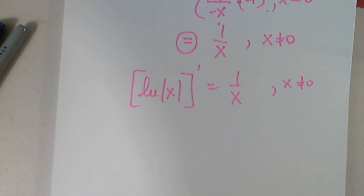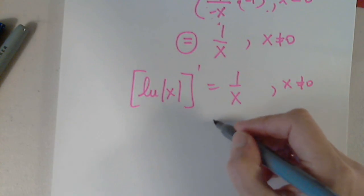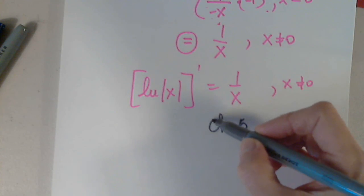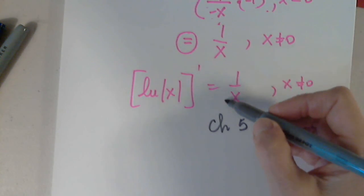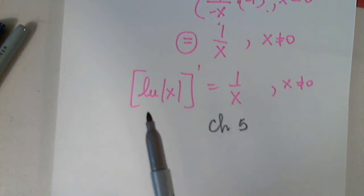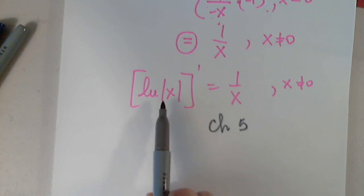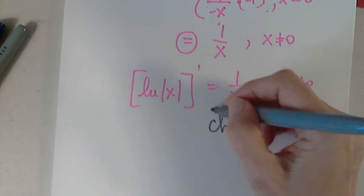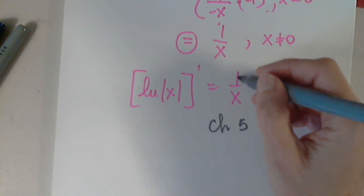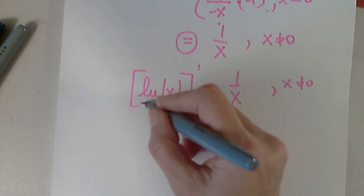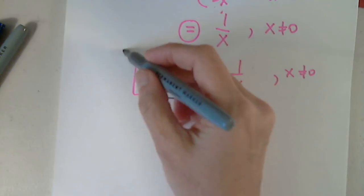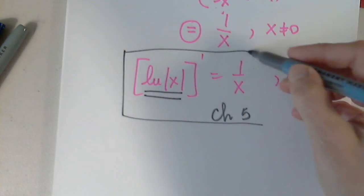Why is this result important? You will remember this when we get to Chapter 5. When we integrate 1/x dx, the result must be the natural log of the absolute value of x — not just ln(x). So in Chapter 5 we're going to integrate 1/x dx and the result is ln|x|. This is a very important result we're going to see again.